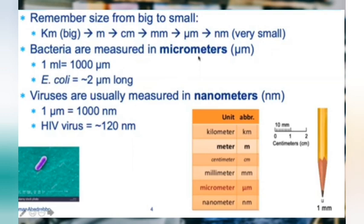These next units are probably new to you. If you take a millimeter — the small ticks on a ruler — and divide it by a thousand, you get micrometers. Bacteria are typically measured in micrometers. Imagine taking the point of a pencil and splitting it a thousand times — that is a micrometer, and you cannot see that with your eye.